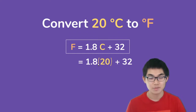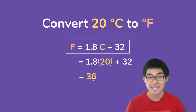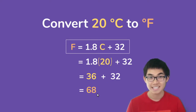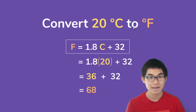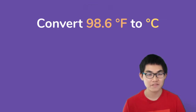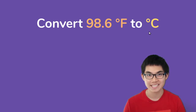The next step is to multiply these two together. We know that 1.8 times 20 gives us 36, and then we take 36 plus 32. So what is 36 plus 32? That's going to give us 68. So what this means is 20 degrees Celsius is the same thing as 68 degrees Fahrenheit, and this is basically our answer.